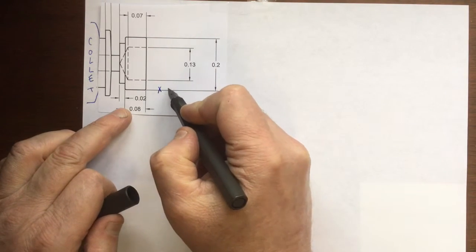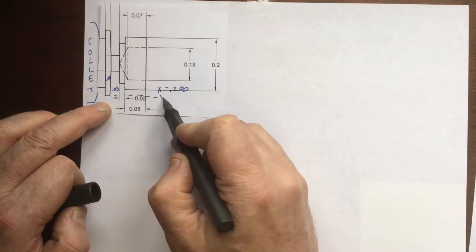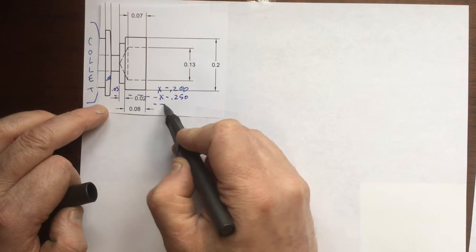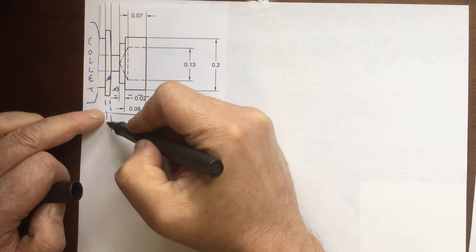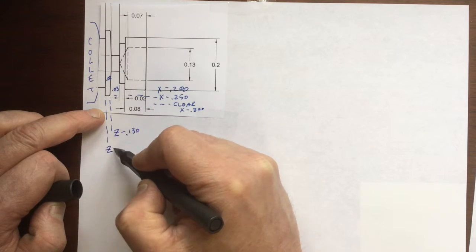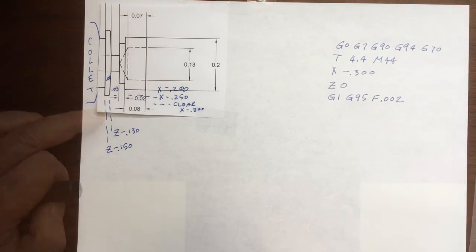This is part two of a programming example for hex gadgets. I'm marking out a few important points in the X and Z direction. There's going to be a pretty big cutoff burr from the last operation, so we'll face that off.